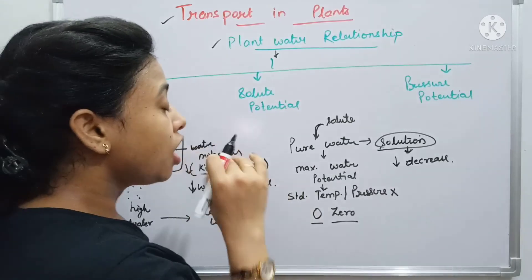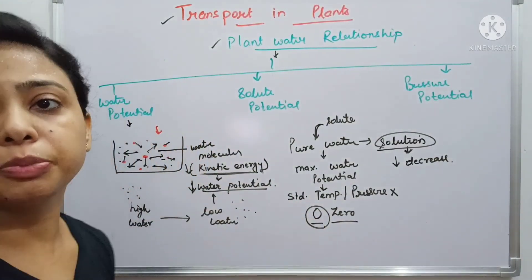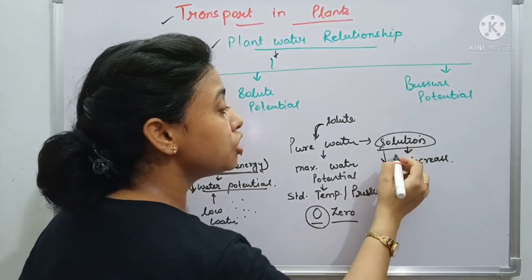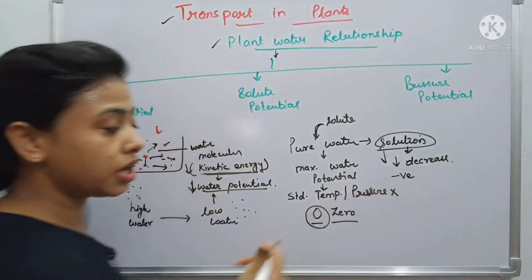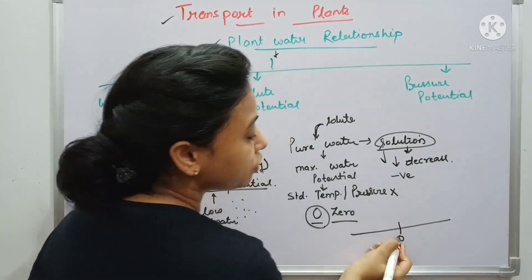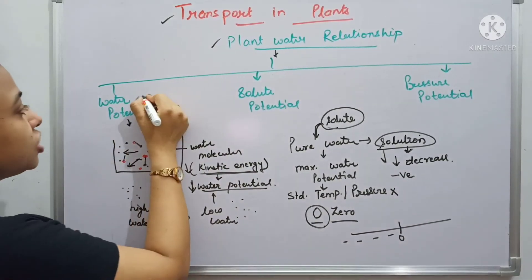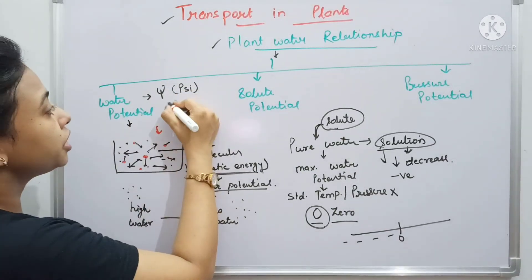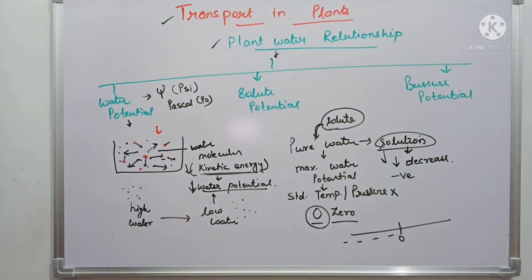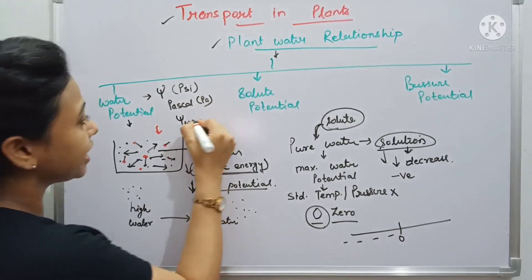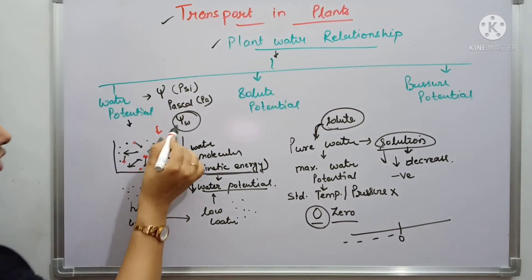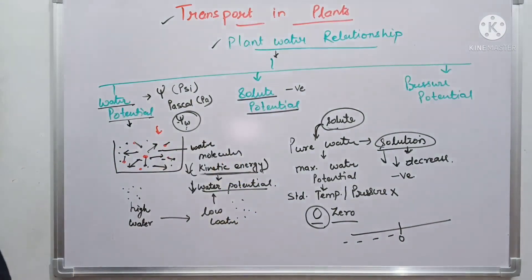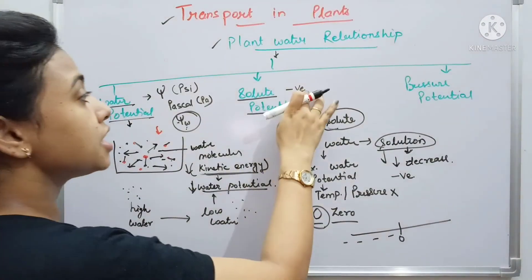All solutions have water potential less than that of pure water. Since pure water is zero, the water potential of any solution is always negative. Water potential is denoted by the symbol psi (ψ) and its unit is the pascal (Pa). For water potential specifically, we write ψw.